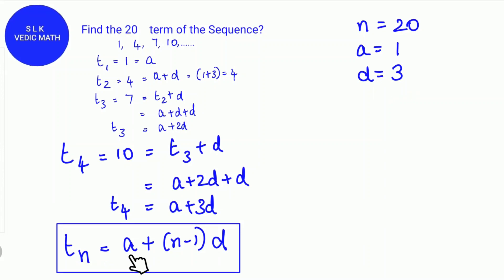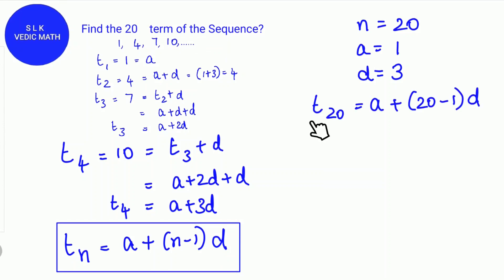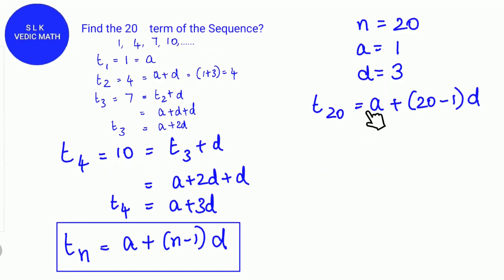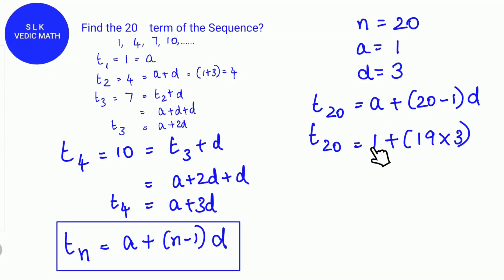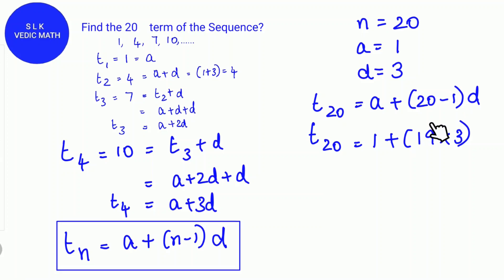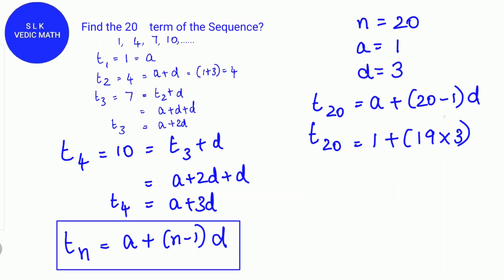We substitute the values n, a and d in this formula. T20 equals a plus (20-1) into d. a is 1 plus (20-1) is 19 and d is 3. So 1 plus 19 into 3.